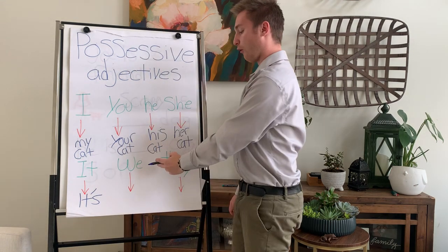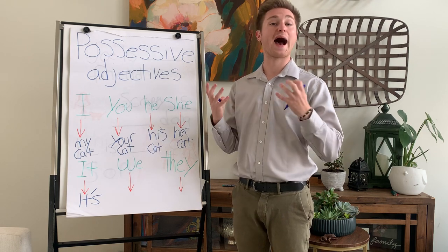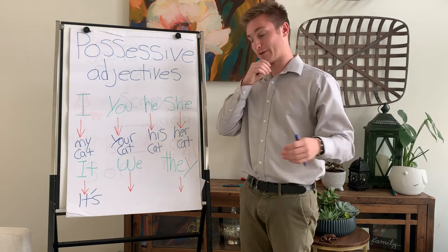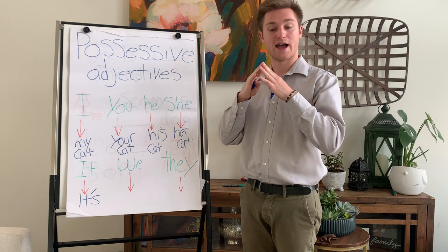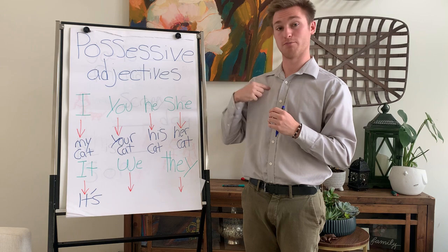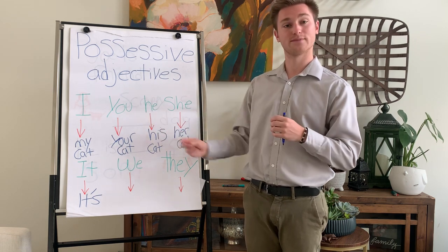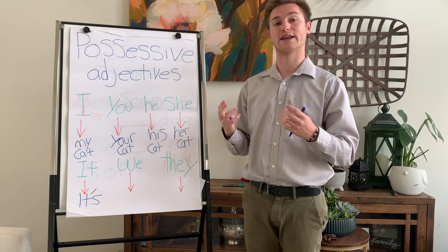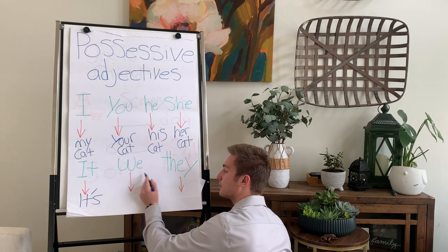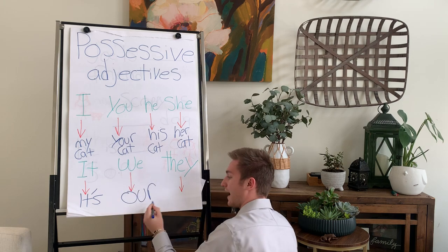And for 'we', we use 'our'. So if we are many people and we live in a house, that is our cat. It belongs to us — to me and her and him. So 'we' becomes 'our', spelled O-U-R.